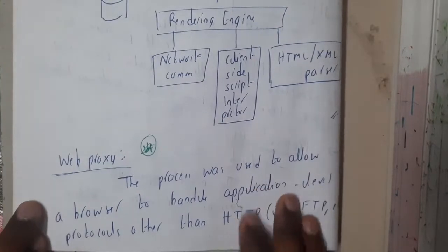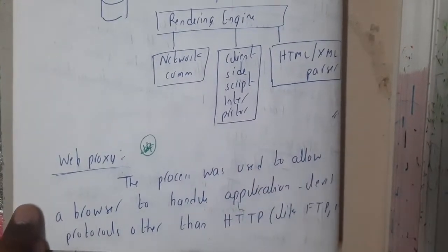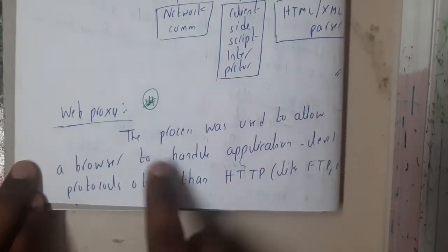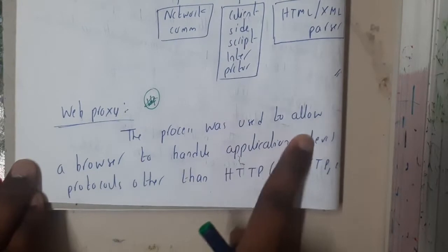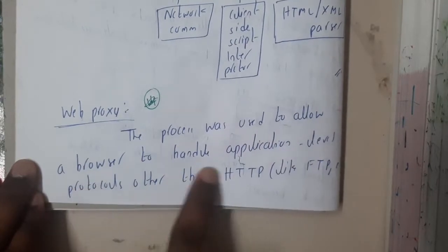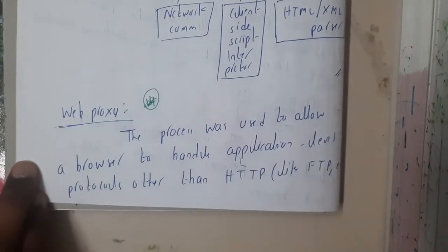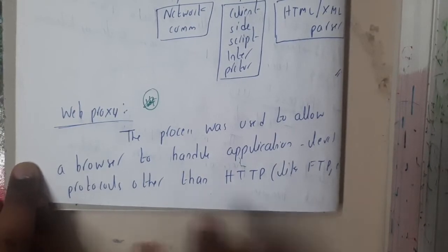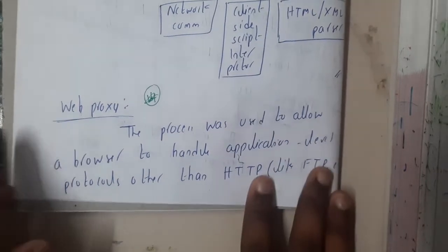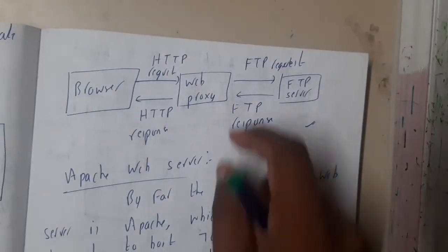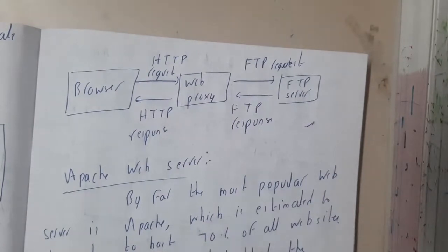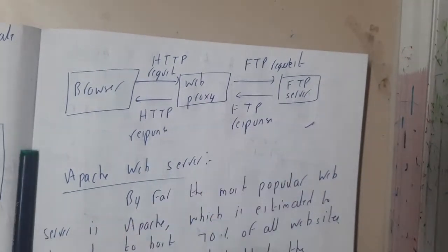Next, we can also use web proxies. The proxy is used to allow a browser to handle application-level protocols other than HTTP. Basically, any web browser will commonly use HTTP only — it will not be using FTP or SMTP and all those things. So to use them, you need to install or add a web proxy.